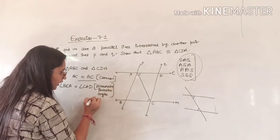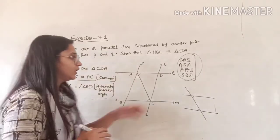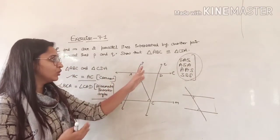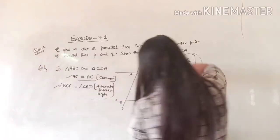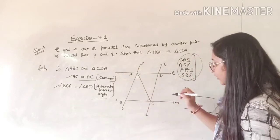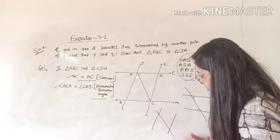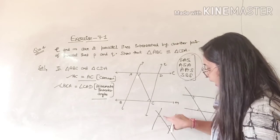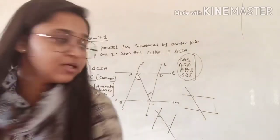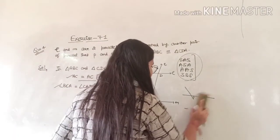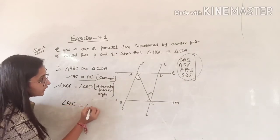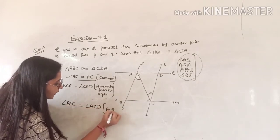For the third condition, P and Q are also parallel lines. If these two lines P and Q are parallel and AC is a transversal, then by alternate interior angles, angle BAC is equal to angle ACD.